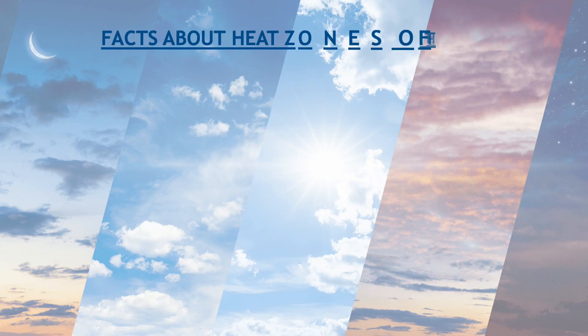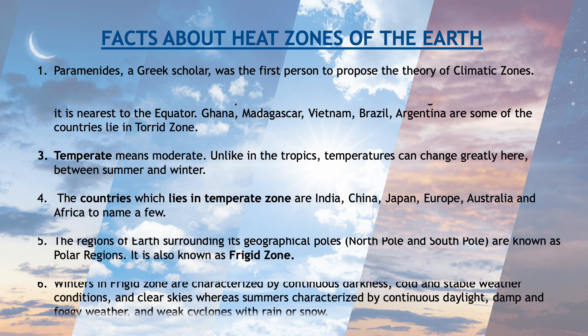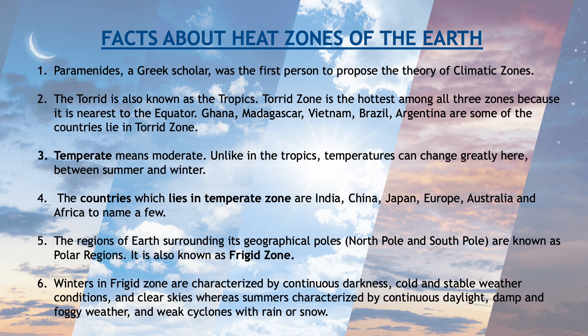Now some important facts about the heat zones of the earth. Parmenides, a Greek scholar, was the first person to propose the theory of climatic zones. The torrid zone is also known as the tropics. Torrid zone is the hottest among all three zones because it is nearest to the equator.